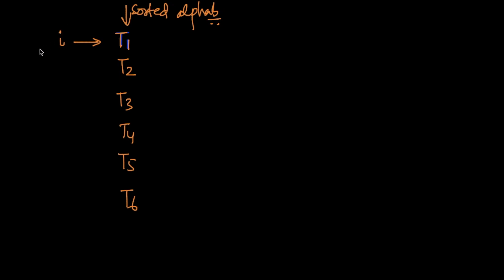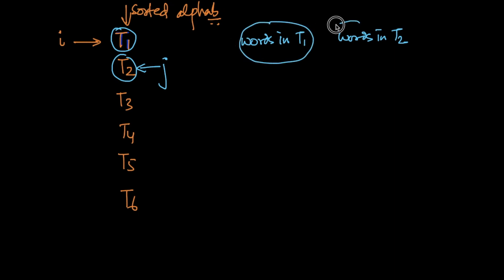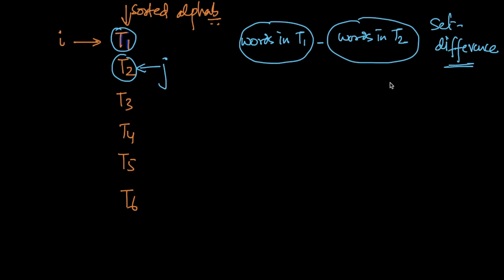We use a variable i and a variable j, starting j at i+1. Since they are sorted, we check how many words the i-th and j-th titles differ by. We get all words in t1, all words in t2, put them in sets, and do a set difference. Sets are very useful data structures in Python — for those who don't know about sets, please check the optional Python videos.